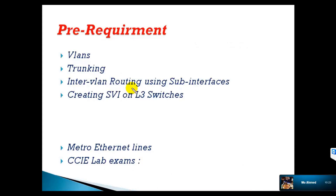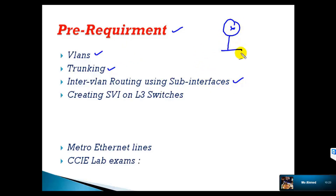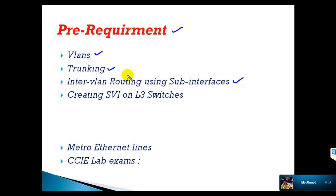Before we get into these things, the first thing I want you to know is the pre-requirements. I expect you to know some basic configuration of VLANs — how to configure VLANs using switchport mode access, switchport mode trunk commands, and trunking configurations. Also using inter-VLAN routing when using a router with sub-interfaces for multiple VLANs, which we did in basic switching concepts. You also need a good understanding of how to create SVIs on your layer 3 switches.